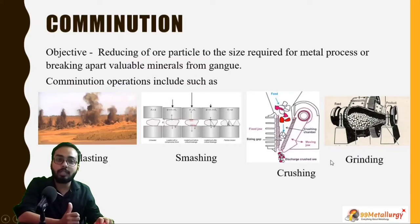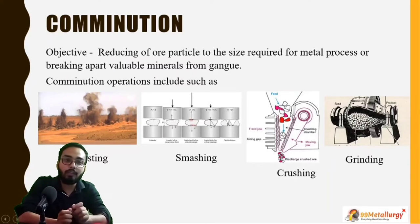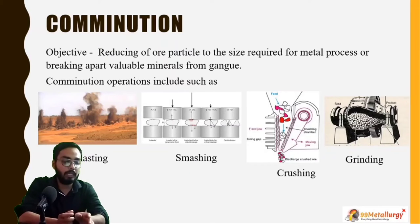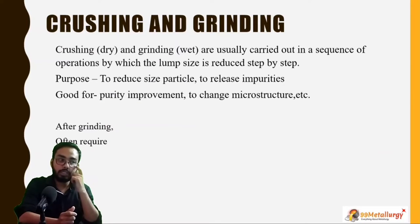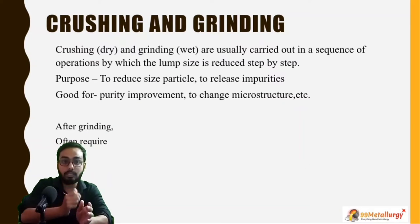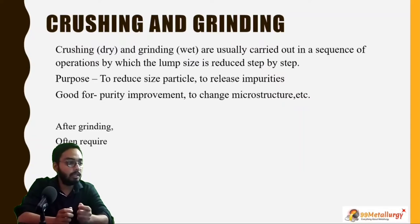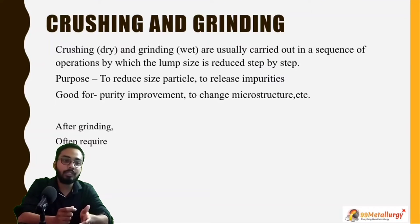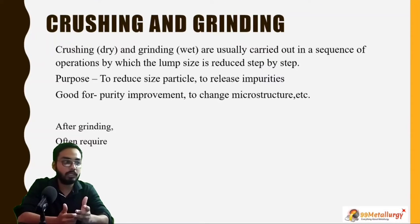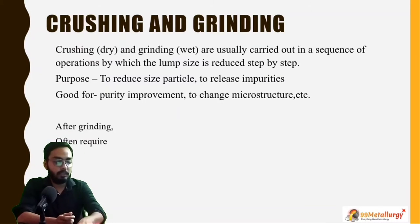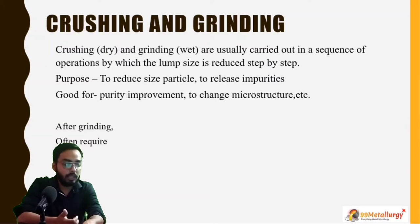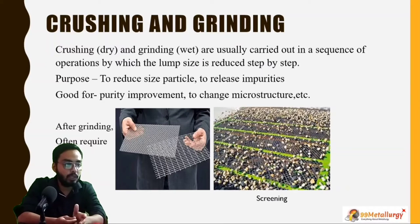We will mainly focus on crushing and grinding because they give the required size of the particles. Crushing and grinding are carried out in a sequential way — the lump size is reduced step by step. We do primary crushing, then secondary, then tertiary, then we go for further processing in grinding to get the required particle size for the company's requirements.